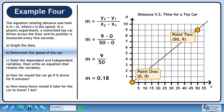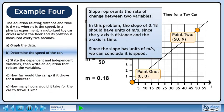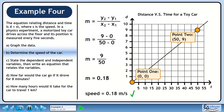In physics, quantities are usually written as a decimal, so let's write the fraction as 0.18. Slope represents the rate of change between two variables. In this problem, the slope of 0.18 should have units of meters per second, since the y-axis is distance and the x-axis is time. Since the slope has units of meters per second, we can conclude it represents speed. The speed of the toy car is 0.18 meters per second.